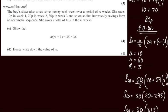We're now told the boy's sister also saves some money each week over a period of m weeks. She saves 10p in week 1, 20p in week 2, 30p in week 3 and so on so that her weekly savings form an arithmetic sequence. She saves a total of £63 in the m weeks. In part c for four marks we need to show that m multiplied by the quantity m plus 1 is equal to 35 times 36.